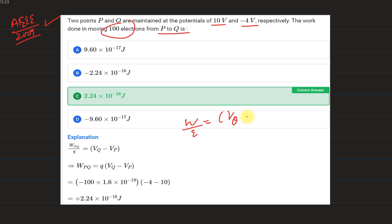We take P to Q, simply written as VQ minus VP. This is the expression to calculate the work done. Work from P to Q is charge multiplied by the potential difference between Q and P.